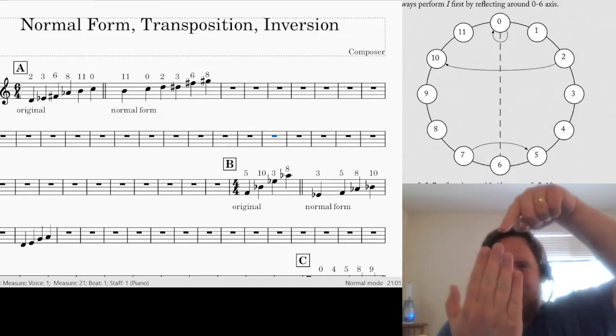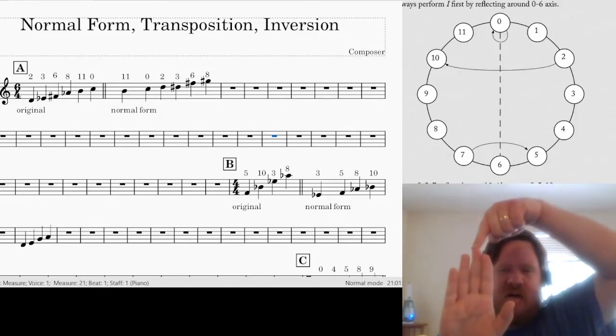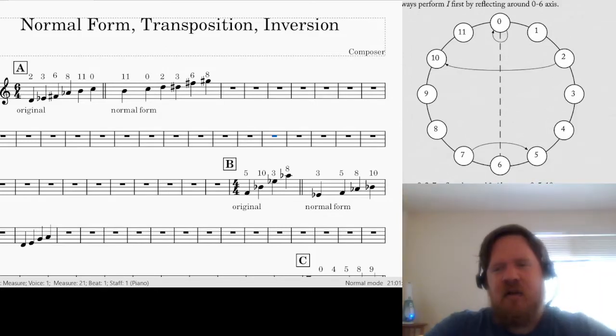Let's start up here. 0, if I flip the clock face, stays right where it is. 0 remains 0. 1 becomes 11. 2, which is D, becomes B-flat. 3 becomes 9. 4, if I invert 4, becomes 8. 5 becomes 7. And 6, just like 0, stays the same because if I just invert the clock face like this.